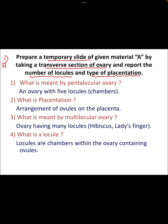If you get question A in the lottery system of TSO of ovary, the probable question could be: what is meant by pentalocular ovary? It is very simple — an ovary with five locules or chambers. In the rough diagram you can count 1, 2, 3, 4, 5, and in each locule you can see the ovule. This is called a pentalocular ovary.